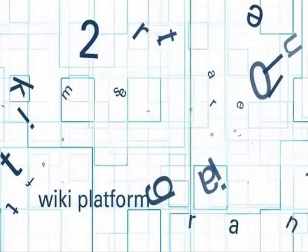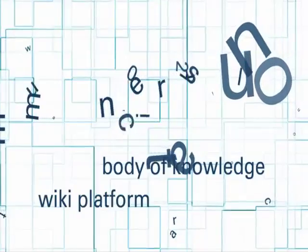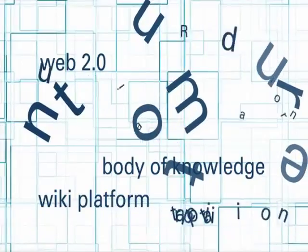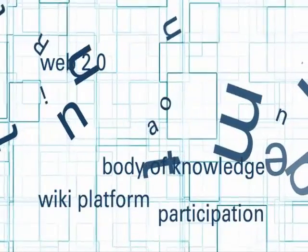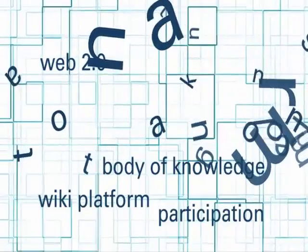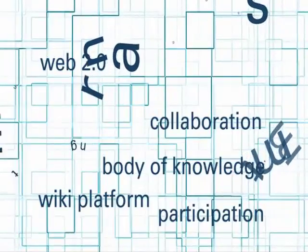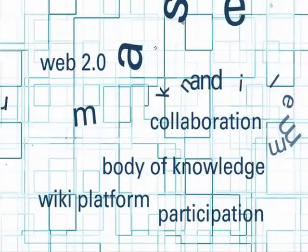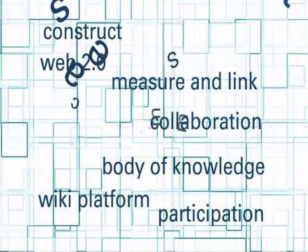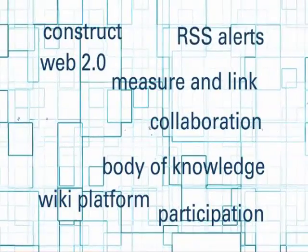GEM runs on a wiki platform. This means that you, the user, help to build the website and the body of knowledge using Web 2.0 functionality. GEM is designed for participation. Templates are available for researchers to upload their existing measures and associated metadata. This collaboration is integrated into all features of the website. You can add your own measure and link it to its construct. You can view a history of the measure and receive updates in real-time through RSS alerts.